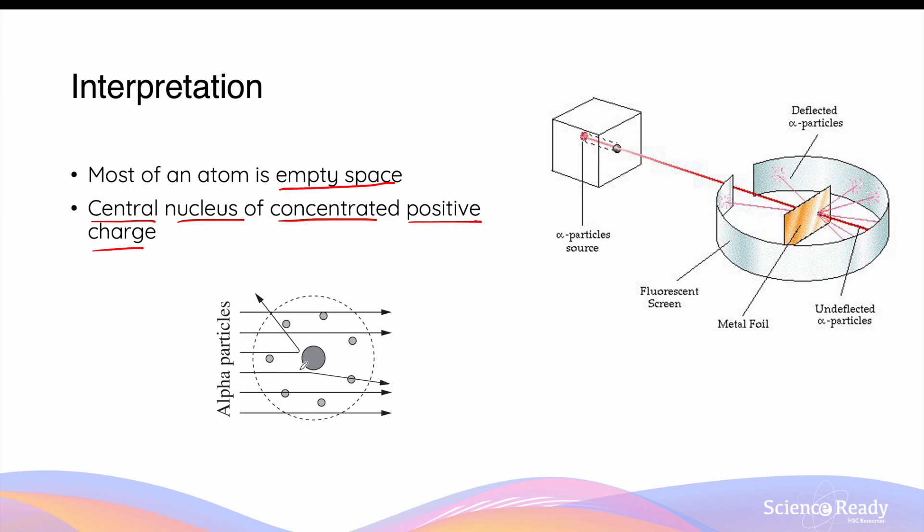However, these large deflections only occur in a few alpha particles because it makes up only a small part of the whole atom. Most of the alpha particles will still pass through undeflected or only be deflected at a small angle, as the atom is mostly made of empty space.